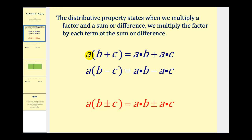For example, if we have a times the quantity b plus c, we're going to multiply the a and the b, and multiply the a and the c. So we'll have a times b plus a times c.